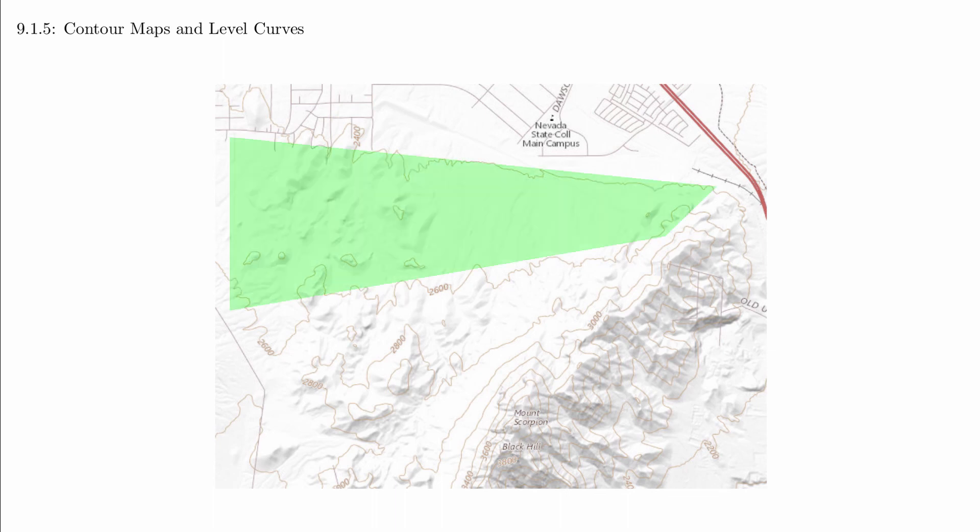Where there aren't many contour lines, the land is basically flat. This region is the part of the land that slowly moves uphill towards the base of the mountains. And over here is Mount Scorpion. We can see that there are lots of contour lines, which makes sense because that's a mountain.